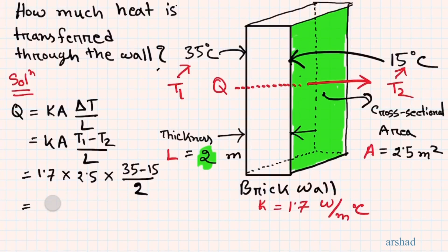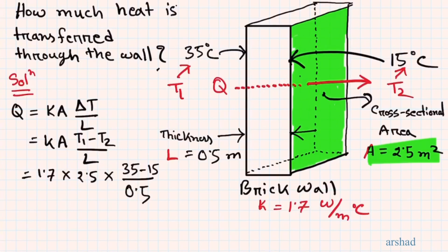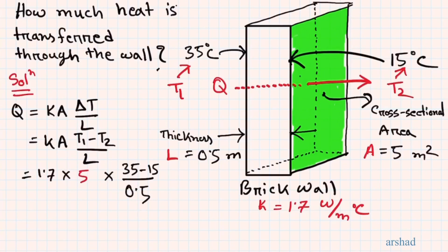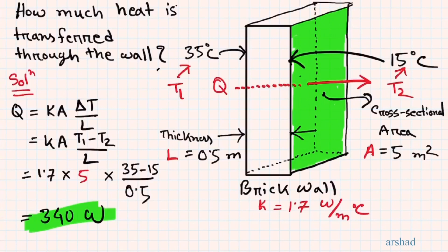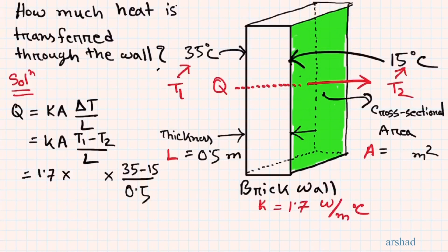Restoring the original problem (L = 0.5 m) and now doubling the cross-sectional area from 2.5 m² to 5 m², we expect heat transfer to double. Calculating gives Q = 340 watts — exactly double the original 170 watts. Increasing the cross-sectional area provides more molecules to initiate lattice vibrations, allowing more heat to be propagated compared to a smaller area.